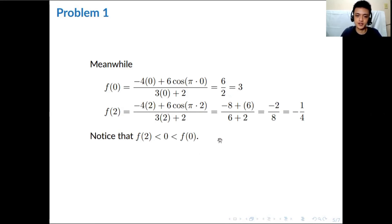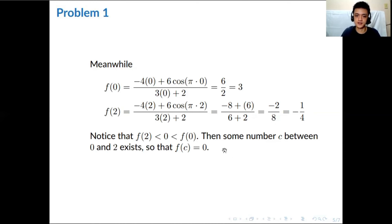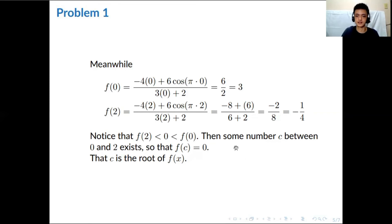We have now satisfied all the conditions for the Intermediate Value Theorem. IVT tells us there must exist some c between zero and two such that f(c) = 0. We don't know exactly what c is, but since we only need to confirm existence, this is sufficient. By IVT, we have shown there exists a number c in (0, 2) such that f(c) = 0 — meaning c is a root of f(x).